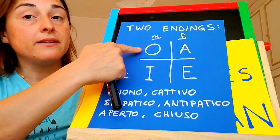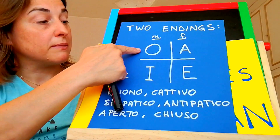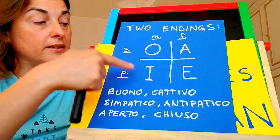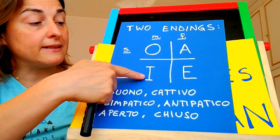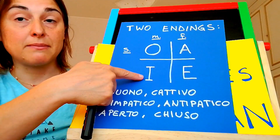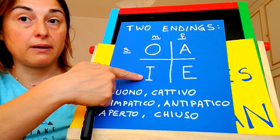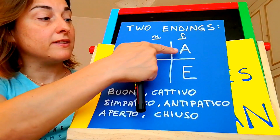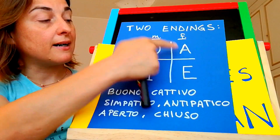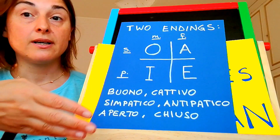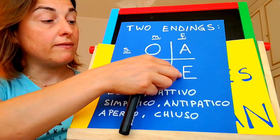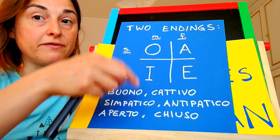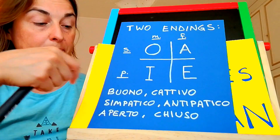You have the ending O for the masculine singular, and you have the ending I for the masculine plural. Also, you have the ending A for the feminine singular, and you have the ending E for the feminine plural.